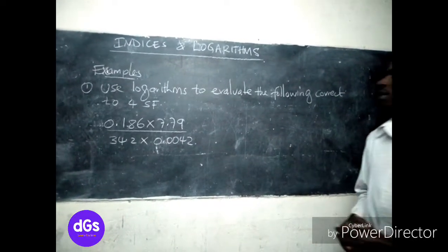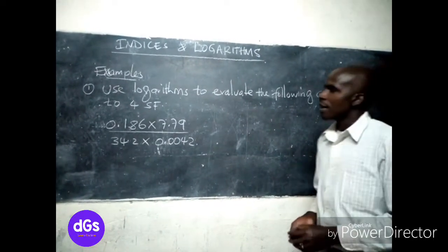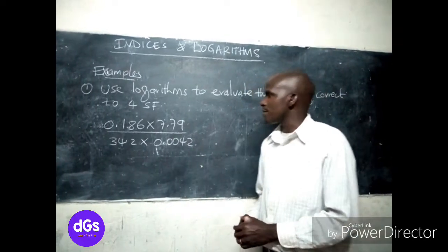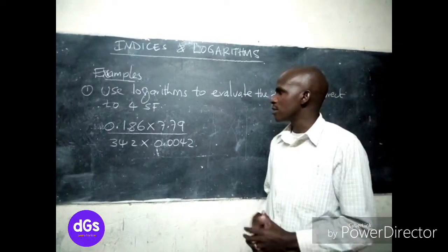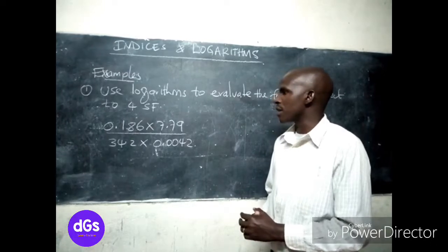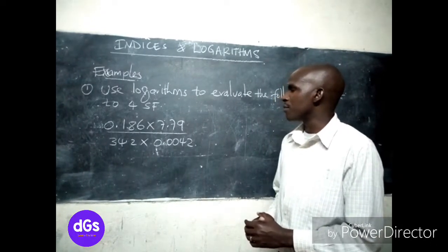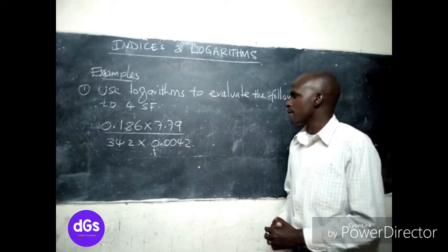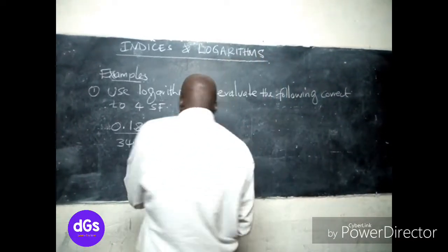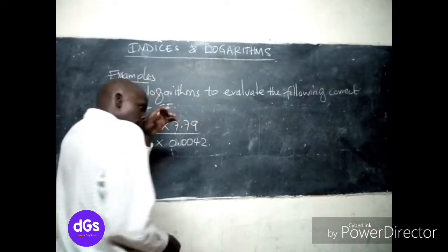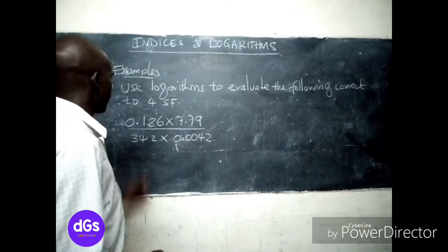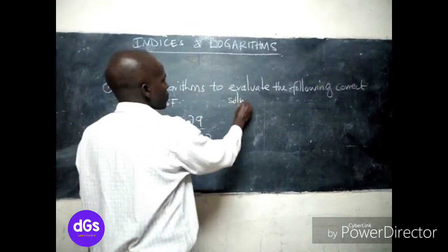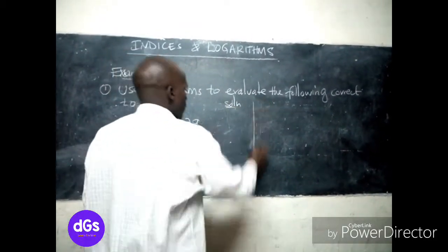We have 0.186 times 7.79 in the numerator, dividing by 34.2 times 0.0042. Now let's solve this one. We have three columns.